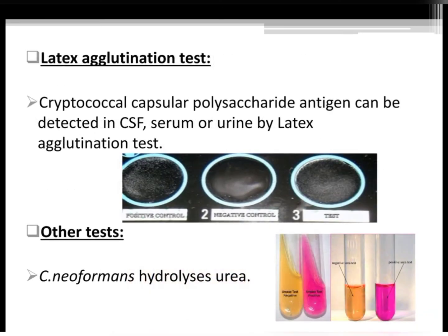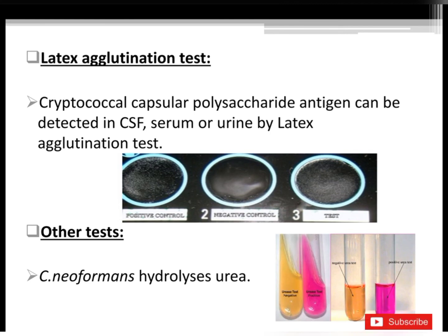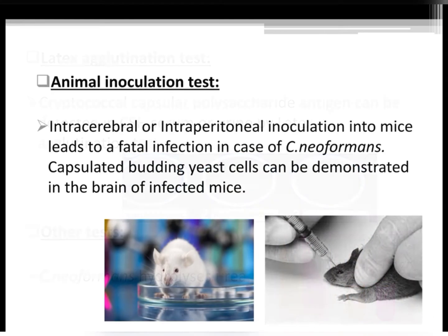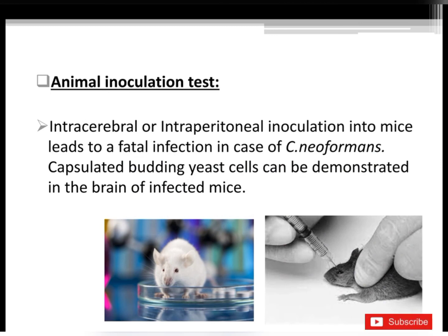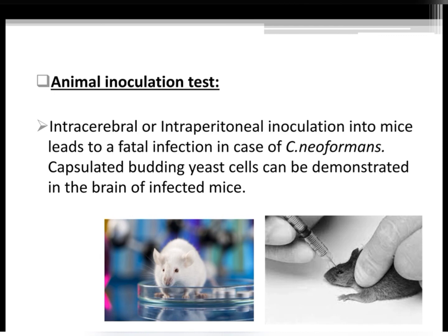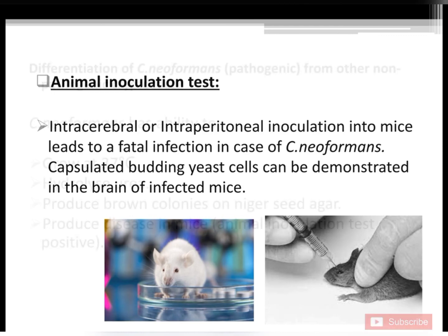Latex agglutination test: Cryptococcal capsular polysaccharide antigen can be detected in CSF, serum, or urine by latex agglutination test. Other tests: Cryptococcus neoformans hydrolyzes urea. Animal inoculation test — intracerebral or intraperitoneal inoculation into mice leads to fatal infection in the case of Cryptococcus neoformans, and capsulated budding yeast cells can be demonstrated in the brain of infected mice.